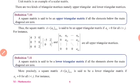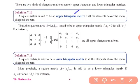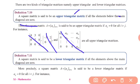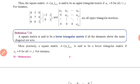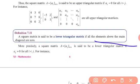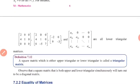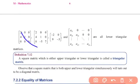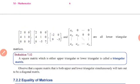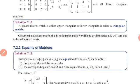Next is the upper triangular matrix. A square matrix is said to be upper triangular if all elements below the main diagonal are zero. For the lower triangular matrix, all elements above the main diagonal are zero. Both upper and lower triangular are types of triangular matrices.